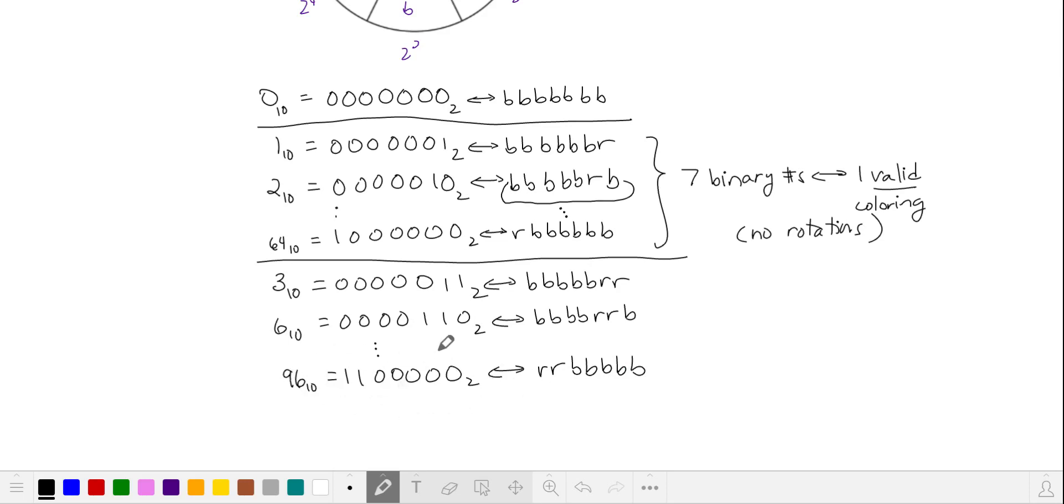And then we have to, these binary numbers correspond to a rotation. So we rotate around like this. And so if we look at in base ten, 65, that corresponds to a one here, five blues and a one here. This is red like that. And if you count these through, this represents seven equivalent binary numbers or the seven binary numbers that are equivalent to one valid coloring because we don't allow rotations.